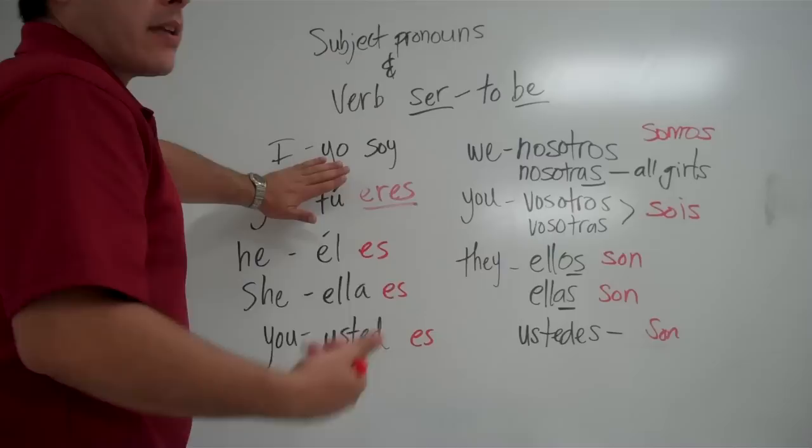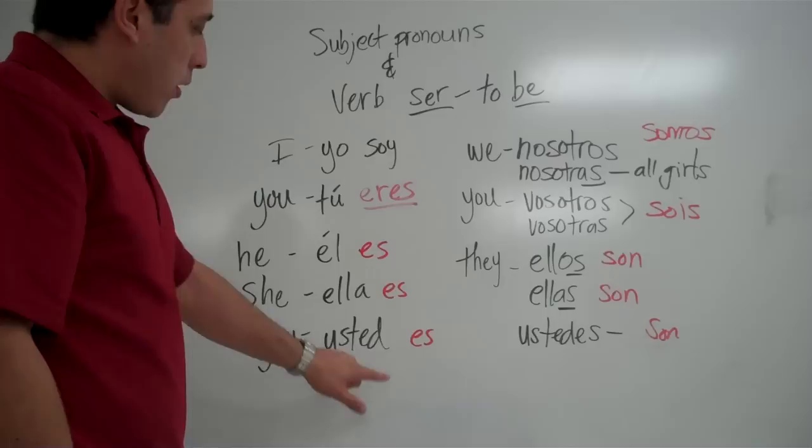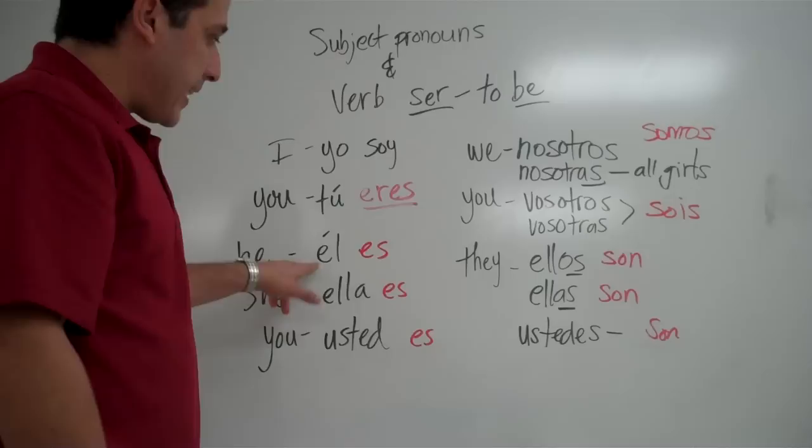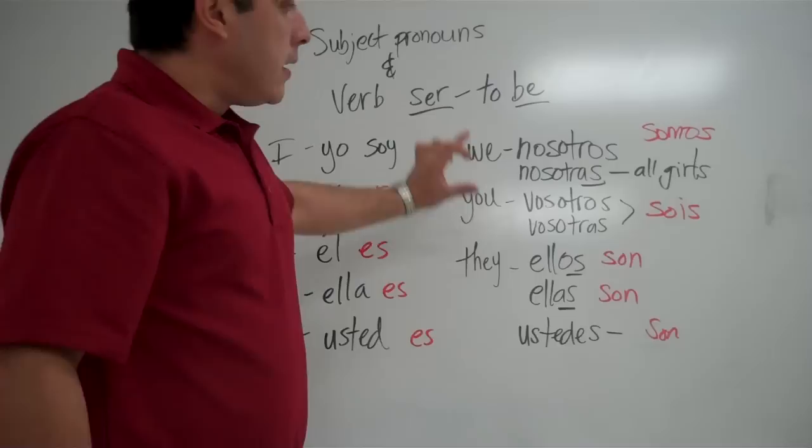You could do the same thing with tú. Instead of saying tú eres estudiante, you could say eres estudiante. Again, because a tú is implied because eres has to go with tú. Here, because you have three different forms of the verb that can go with es, you want to include your subject. Él es. Ella es. Usted es. That way it's clear. Somos has to go with nosotros. So, you could leave nosotros out. You could say somos instead of nosotros somos.